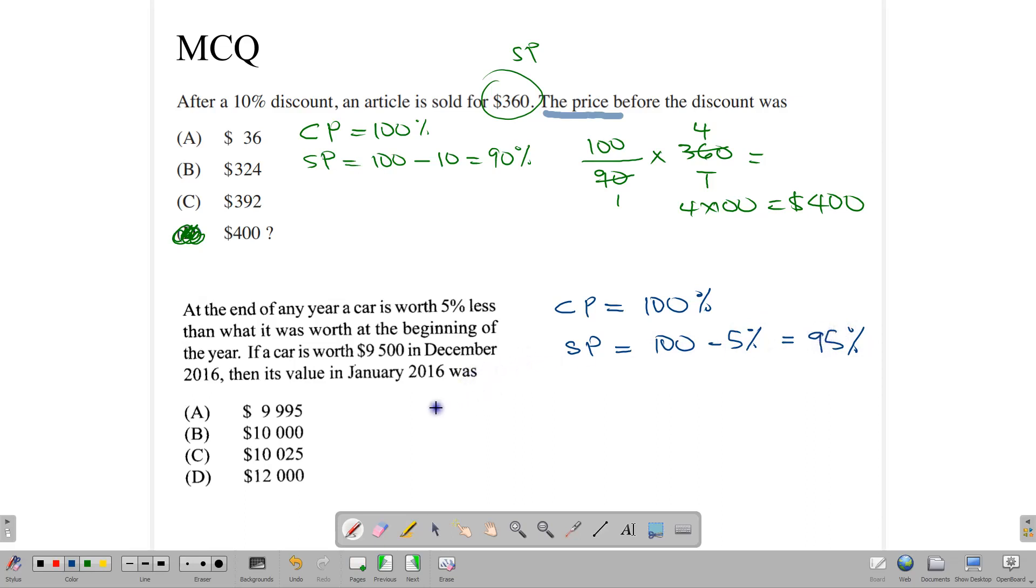So the value of the car, let's call it the cost price, is equal to 100% over 95% multiplied by this price, which is the worth at the end of the year. Notice that the cancellation comes out nice and easy. 95 into 95 goes 1. So this gives us 100. And now we simply have to multiply 100 times 100 to get our answer. 100 multiplied by 100 is $10,000. And so the answer that we're looking for is B. The car at the beginning of the year was worth $10,000. At the end of the year, it's worth $9,500.